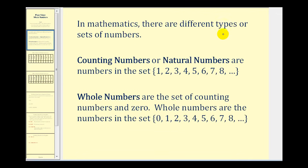In mathematics there are different types or sets of numbers. The counting numbers, sometimes called natural numbers, are the set of numbers as we see here. You can see why they're often called the counting numbers — one, two, three, four, five, and so on — because these are the numbers we use to count items.